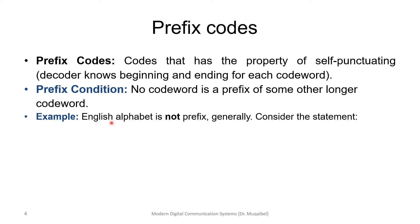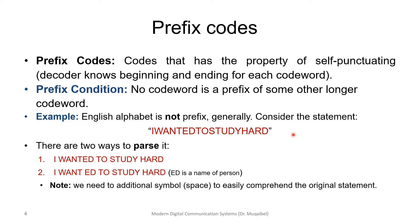The English alphabet is not a prefix code. If you get these letters, they are not self-punctuating, which means you cannot tell exactly where to separate the words. For example, 'I wanted to study hard' could also be parsed as 'I want Ed to study hard,' where 'Ed' is just a name. If it were self-punctuating, we wouldn't need the additional space symbol to distinguish the two possible statements.